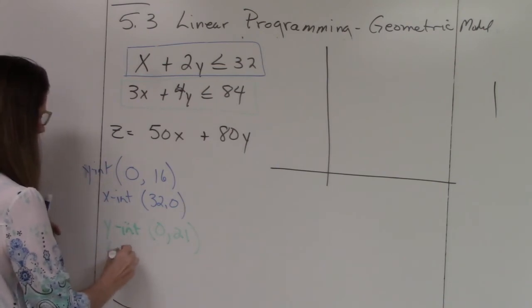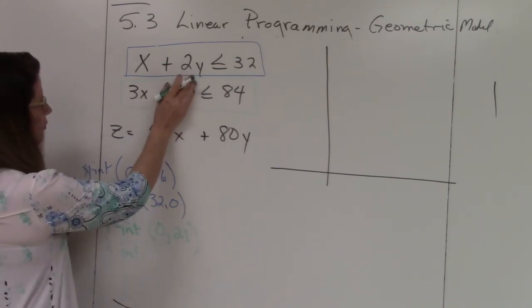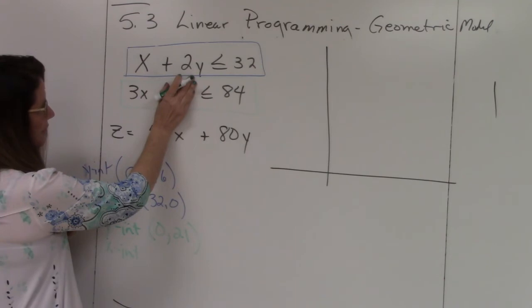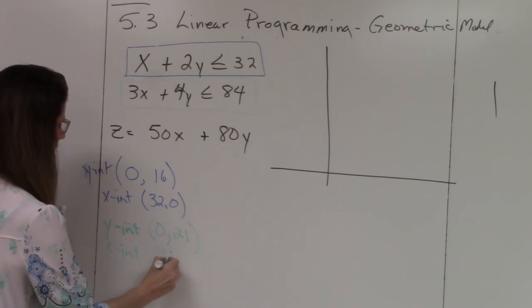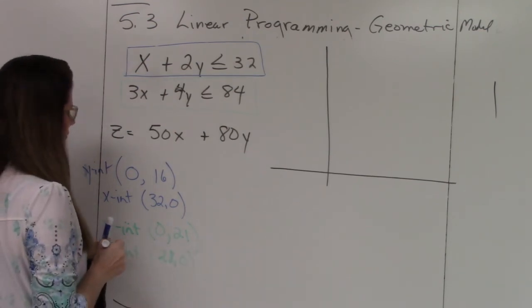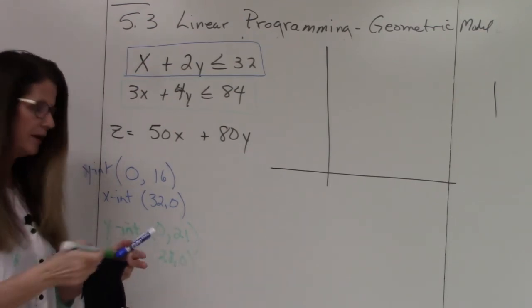For the green, the Y intercept - I cover up the X - is 4Y equals 84. So Y equals 84 divided by 4, which is 21. So when X is 0, Y is 21. My X-intercept, I cover up the Y. 3X equals 84, so 3 goes into 84 twenty-eight times. So it's 28 and 0.